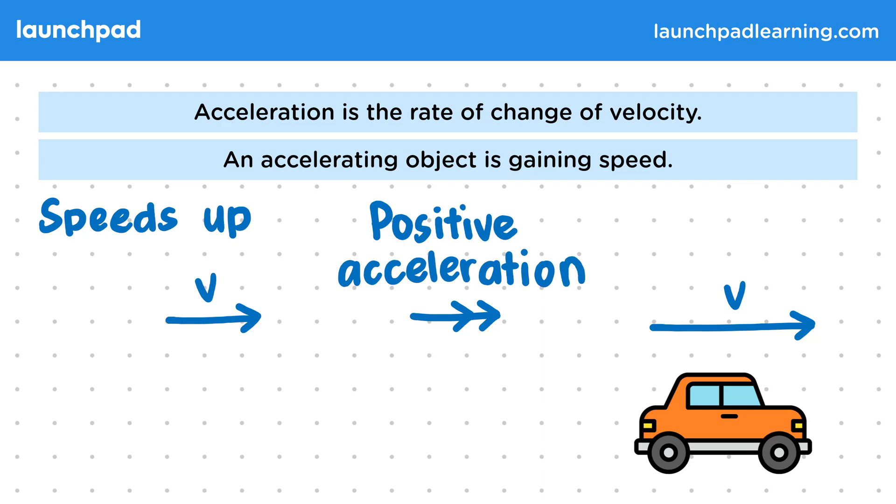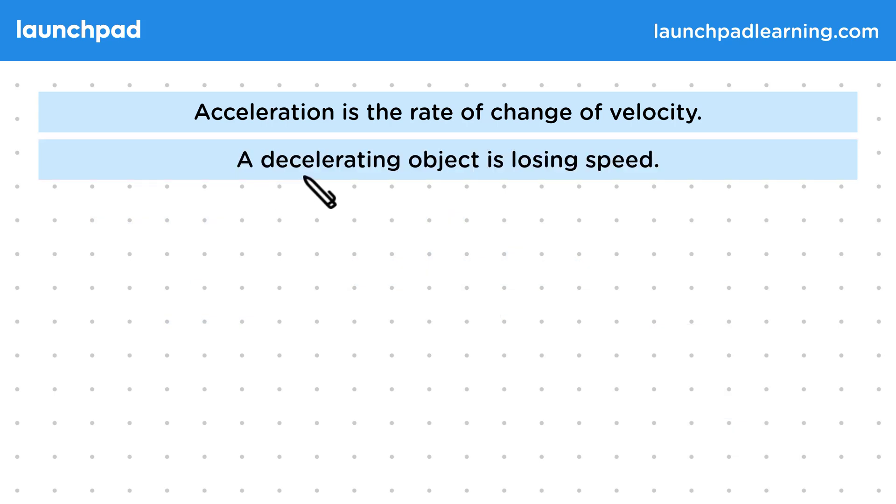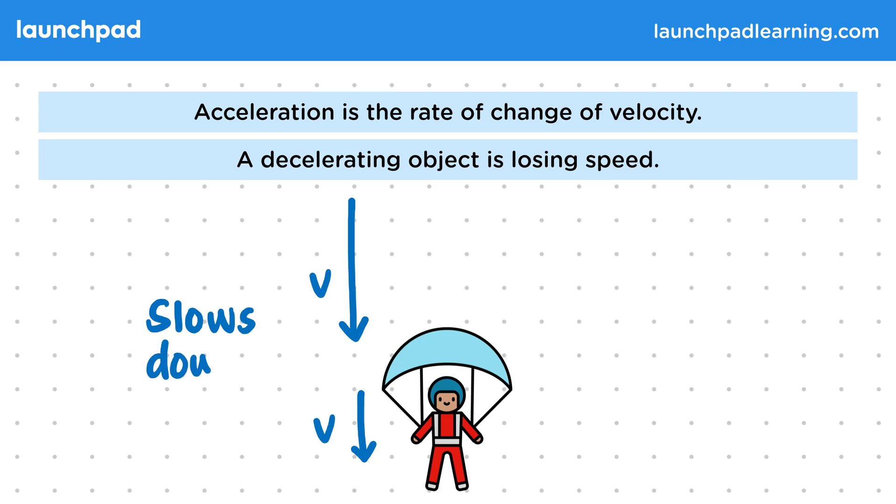But what about an object that's losing speed? A decelerating object is losing speed. This time, let's look at a skydiver who has just deployed a parachute. Here we see that they start off moving quickly and then end moving slowly. In other words, they slow down.